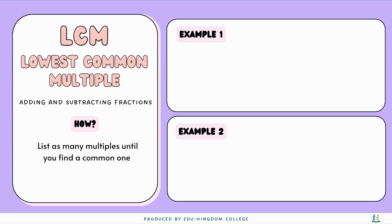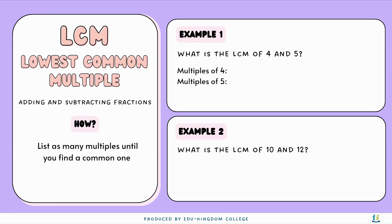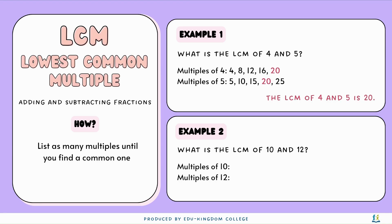Now, moving on from multiples, we have lowest common multiple. The lowest common multiple, LCM for short, is used for adding and subtracting fractions. All we have to do is list as many multiples until you find the common ones. Example 1: what is the LCM of 4 and 5? The multiples of 4 are 4, 8, 12, 16, 20, and the multiples of 5 are 5, 10, 15, 20, 25. You can see that 4 and 5 both have the multiple 20, so the lowest common multiple of 4 and 5 is going to be 20.